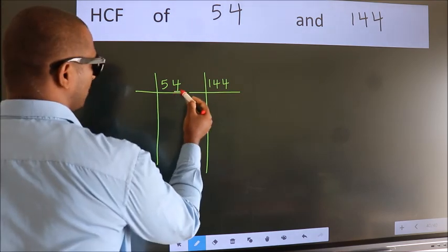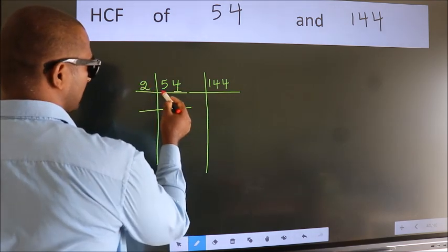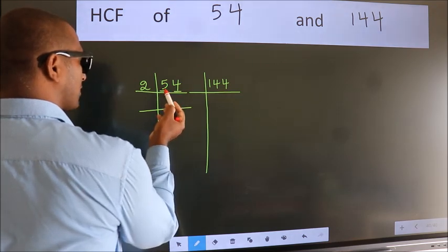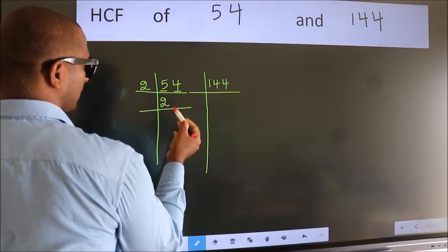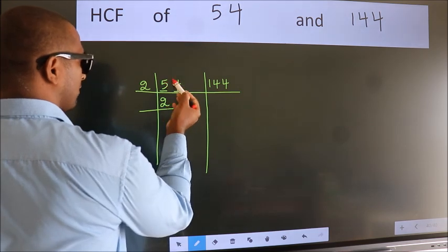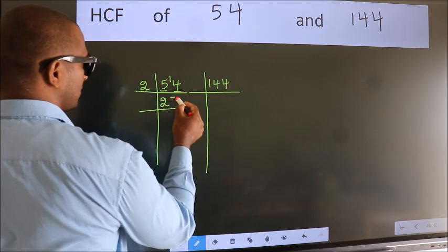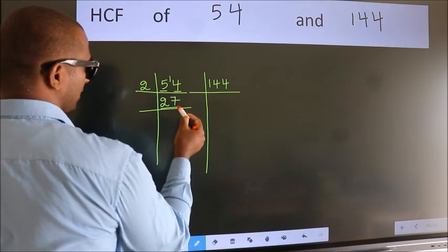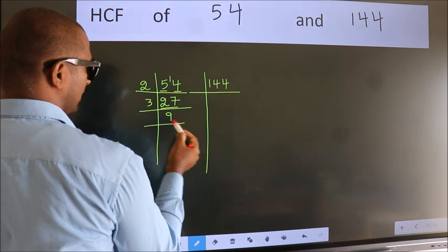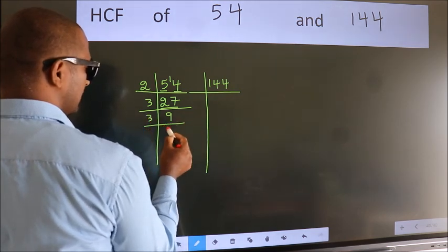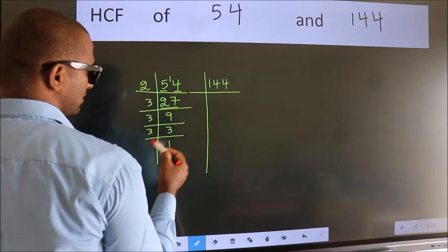For 54: the last digit is 4, so take 2. The first number is 5; a number close to 5 in the 2 table is 2×2=4. So 5-4=1, carried forward gives 14. In the 2 table, 2×7=14. So 27 is next: 3×9=27. Then 9 is 3×3. And 3 is a prime number, so 3×1=3.